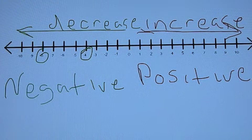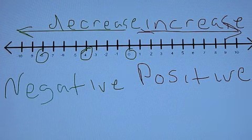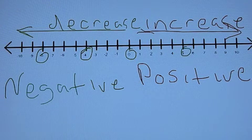Zero is larger than negative four. Five is larger than zero.